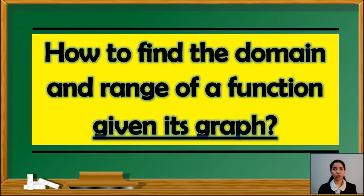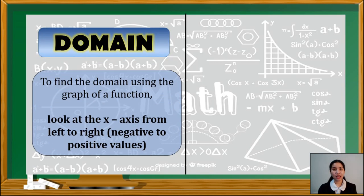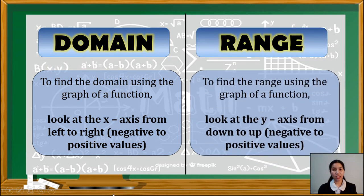After understanding how to find the domain and range of a set of ordered pairs, let us now find the domain and range of a function given its graph. To do this, take note that in finding the domain, we have to look at the x-axis from left to right, starting from the negative values going to the positive values. While for the range, we have to look at the y-axis from down to up, still from the negative going to the positive values.